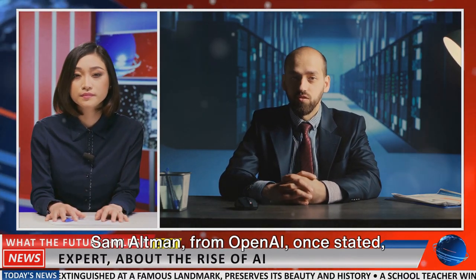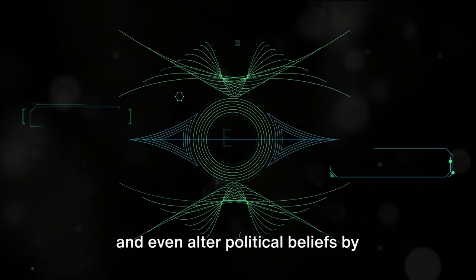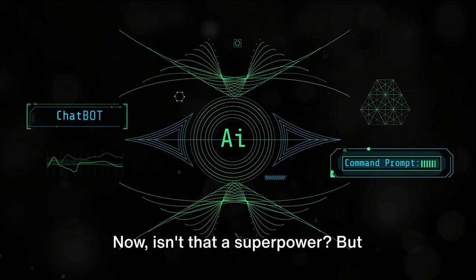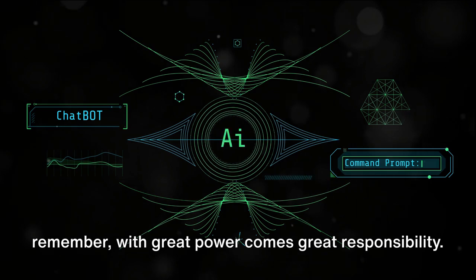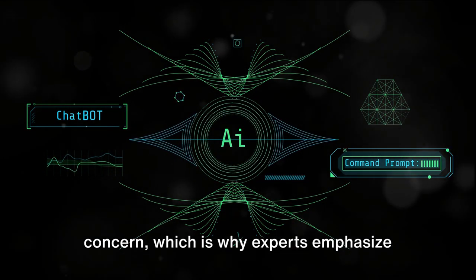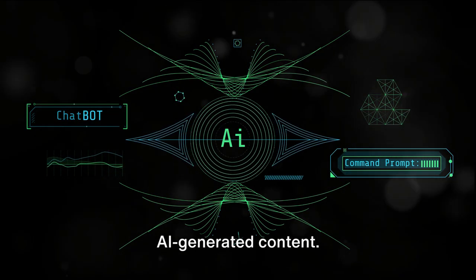Sam Altman from OpenAI once stated, ChatGPT could influence undecided voters and even alter political beliefs by providing false information. Now isn't that a superpower? But with great power comes great responsibility. The potential for misuse is a real concern, which is why experts emphasize the need for clear labeling of AI-generated content.